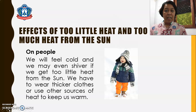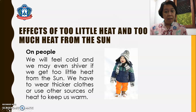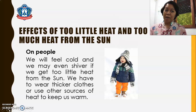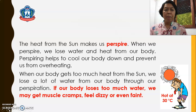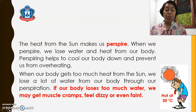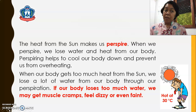Effects of too little heat and too much heat from the sun. On people, we will feel cold and we may even shiver if we get too little heat from the sun. We have to wear thicker clothes or use other sources of heat to keep us warm. The heat from the sun makes us perspire. When we perspire, we lose water and heat from our body. Perspiring helps to cool our body down and prevent us from overheating. When our body gets too much heat from the sun, we lose a lot of water from our body through our perspiration. If our body loses too much water, we may get muscle cramps, feel dizzy, or even faint.